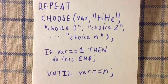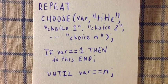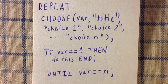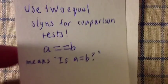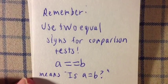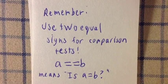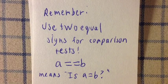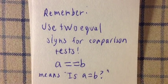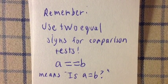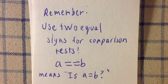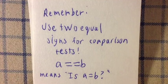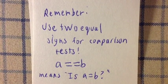The choose variable — VAR, or whatever you designate it — will take the value of the choice you make. So if I choose choice 1, VAR will take a value of 1. In HP Prime programming languages, remember to use two equal signs for comparison tests. So 'A == B' tells it to run the test: is A equal to B.